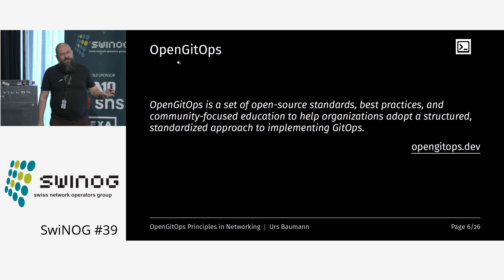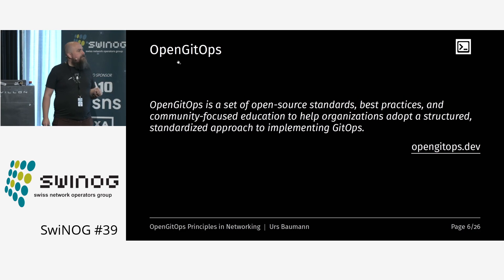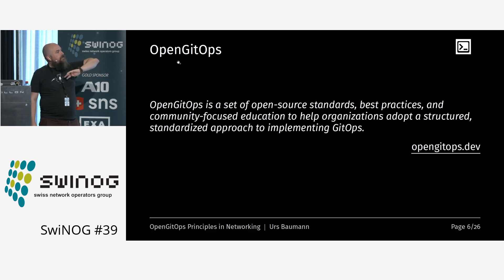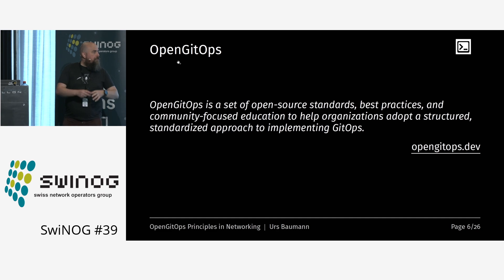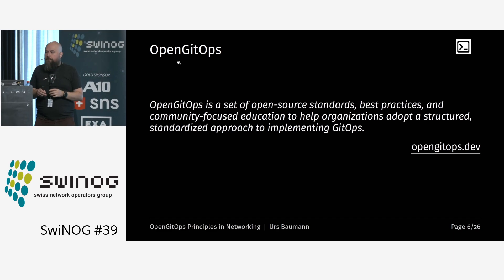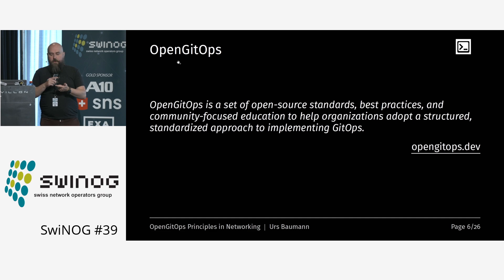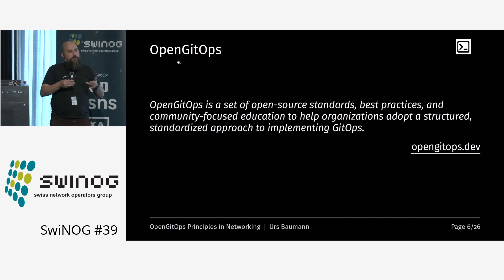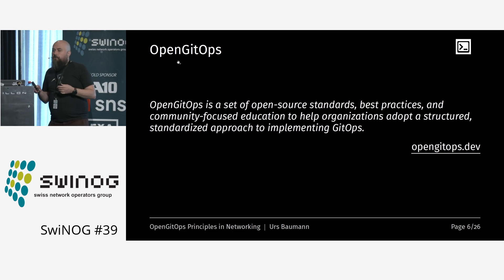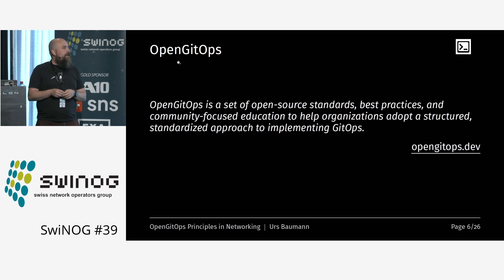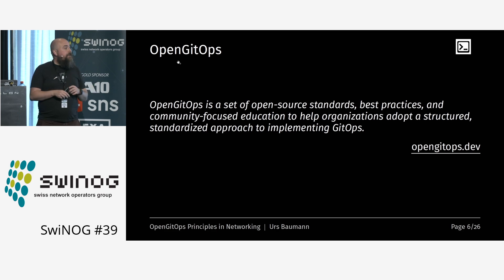Around 2020, there was an initiative to build OpenGitOps — an open source community in the Linux Foundation or Cloud Native Foundation — with the goal to standardize the term GitOps and define four principles. Some big companies are involved. The idea is to define principles that make it easier to talk about GitOps, to educate, and also to compare tools, because nowadays we have so many tools. If we know all four principles are fulfilled, we have a good idea what to expect from a tool.